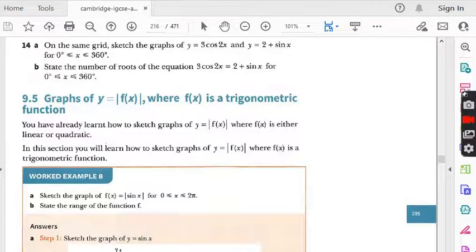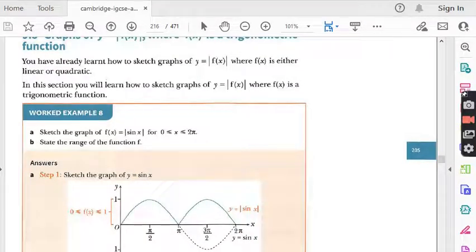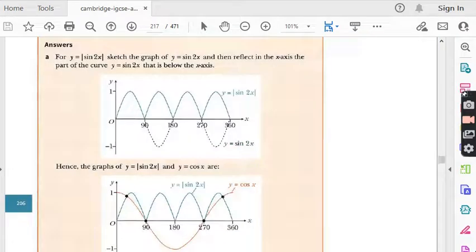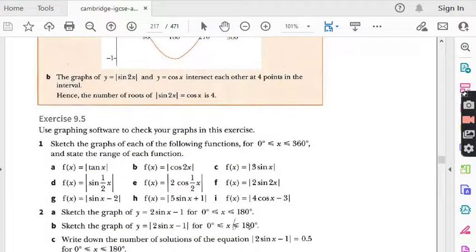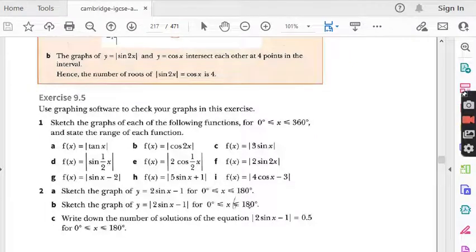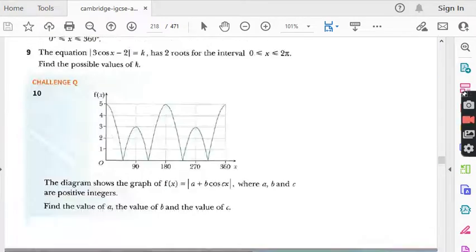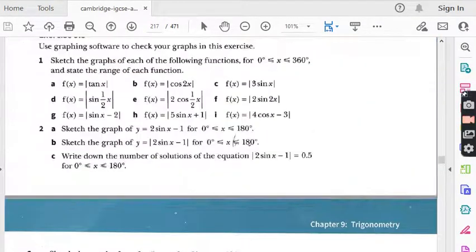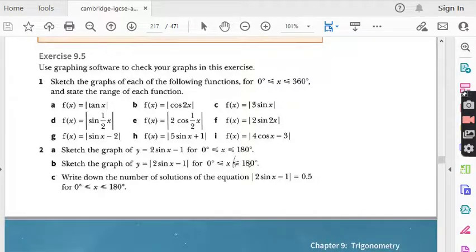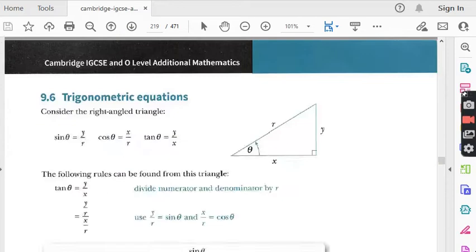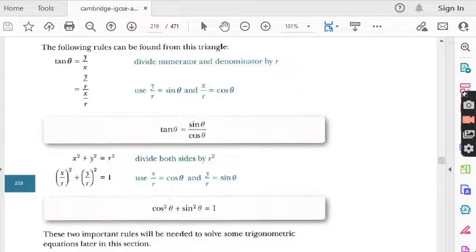Anyways, what next? Next exercise 9.5 is also related to graph of trigonometric function, but we call this graph of absolute value trigonometric function. So if you are familiar with exercise 9.4, this exercise will not feel difficult for you. Very easy exercise 9.5. How many questions? 1, 2, 3, 4, 5, 6, 7, 8, 9. There are 9 questions with so many parts.